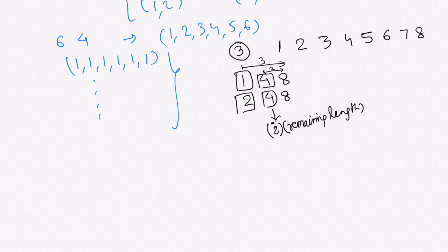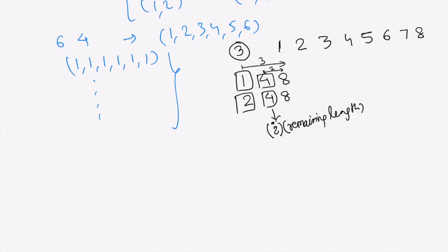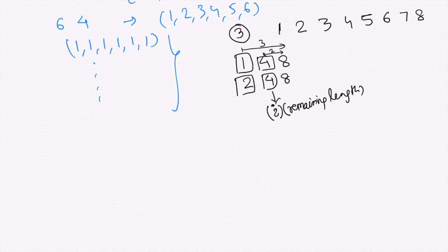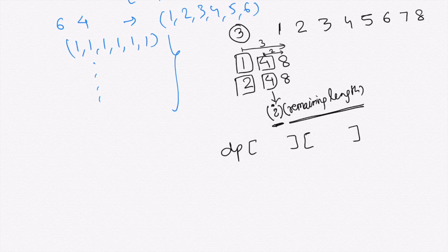We observe that the combination of the current number i and the remaining length is what defines the state of this problem. This combination appears multiple times, so it's not wise to solve it again and again. This is exactly why we use DP. Since there are two different variables impacting the state, the DP will be two-dimensional.